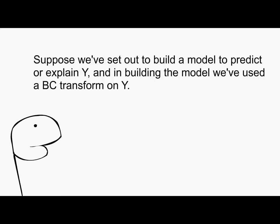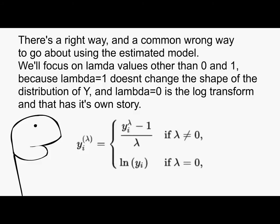Suppose we have set out to build a model to predict or explain Y, and in building the model we have used the BC transform on Y. There is a right way and a common wrong way to go about using the estimated model.